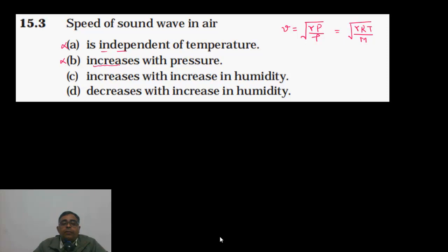C increase with increase in humidity or d decrease with increase in humidity. Humidity means ki water vapors aa jayenge. Water vapors aa ne say jo density of air hai that decreases and hence the speed of sound in air increases. So c is the correct option and d is wrong.